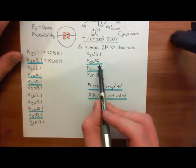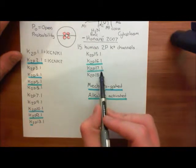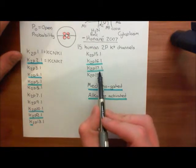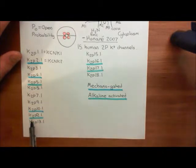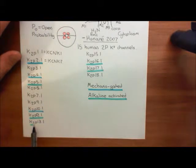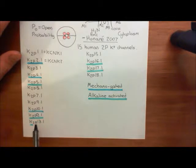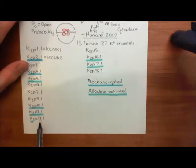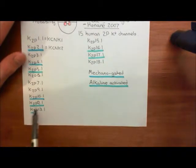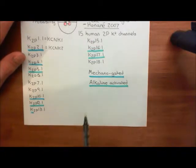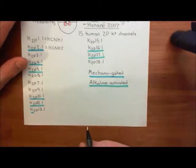Now K2P16.1 and K2P17.1 are also alkaline activated. I was just about to tell you that K2P13.1 and K2P12.1 are also alkaline activated, but they're not - that would have been a mistake. So do not underline these ones in turquoise; they are not activated by low proton concentrations.